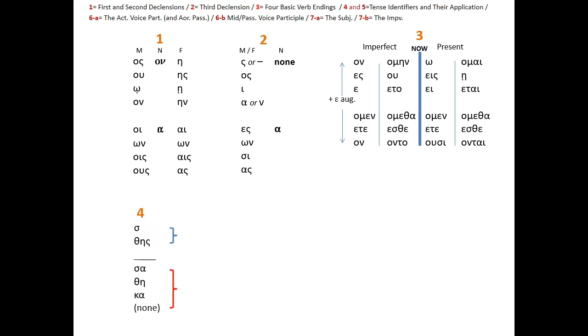Probably the most important contribution my method makes is with minimums four and five. These two minimums makes tense identification very simple. It's often an elusive element for many students. The tense identifiers and their application apply to all verbs in all tenses, voices, and modes, and to all participles, active, middle, passive, and all genders.